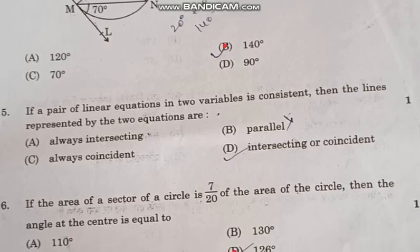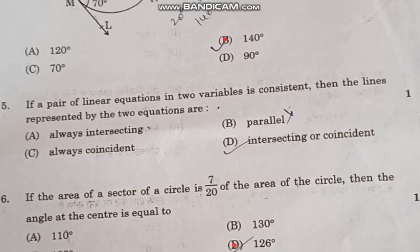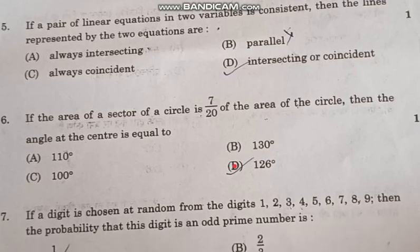Question number 5: The pair of linear equations in two variables is consistent, then the lines representing the two equations are correct answer option D, intersecting or coincident.